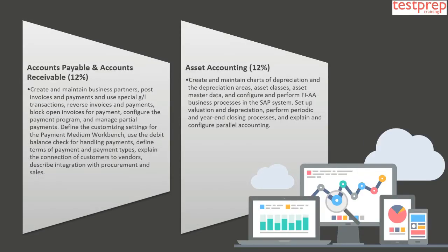Domain 3: Accounts Payable and Accounts Receivable, which comprises 12% weightage in the exam. This covers creating and maintaining business partners, posting invoices and payments, using special G/L transactions, reversing invoices and payments, blocking open invoices for payment, configuring the payment program, and managing partial payments. Define customizing settings for the payment medium workbench, use the debit balance check for handling payments, define terms of payment and payment types, explain the connection of customers to vendors, and describe integration with procurement and sales.